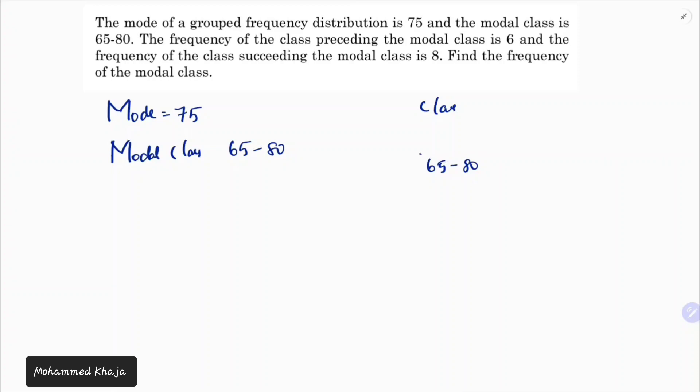This will be F1, the frequency of the modal class. The frequency preceding the modal class - the frequency of the class preceding the modal class is 6. The frequency of the class succeeding the modal class is 8. We need to find the frequency of the modal class.